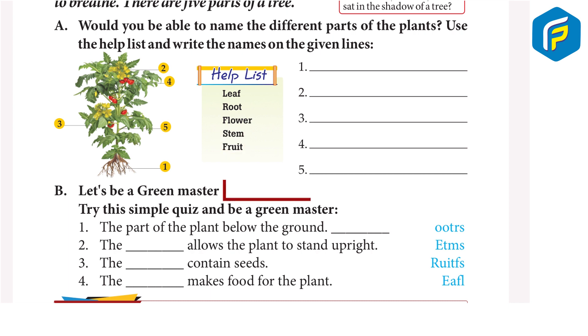B: Let's be a green master. Try this simple quiz and be a green master. One: the part of plant below the ground - answer: roots. Two: the stem allows the plant to stand upright. Three: the fruits contain seeds.